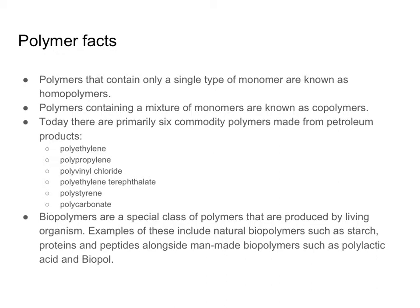If we were to take a look at the plastic materials that we use every day, what we'll note is that there are usually only about six common commodity polymers made from petroleum that are used in many products. Those include polyethylene, polypropylene, polyvinyl chloride, polyethylene terephthalate, polystyrene, and polycarbonate. We will focus primarily in the notes on polyethylene, polyvinyl chloride, and polystyrene, because they are named specifically within the HSC syllabus.